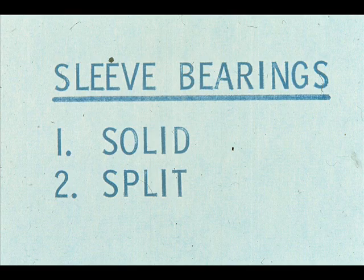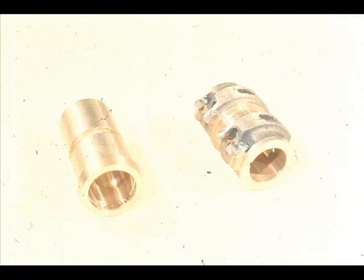There are two basic types of sleeve bearings now in common use: the solid type and the split type. Of course, there are variations to both of these types, some of which you will be shown later. The solid sleeve bearing looks like a section of tubing or pipe. The split sleeve bearing is split lengthwise down the center, and it is the most common type in use.